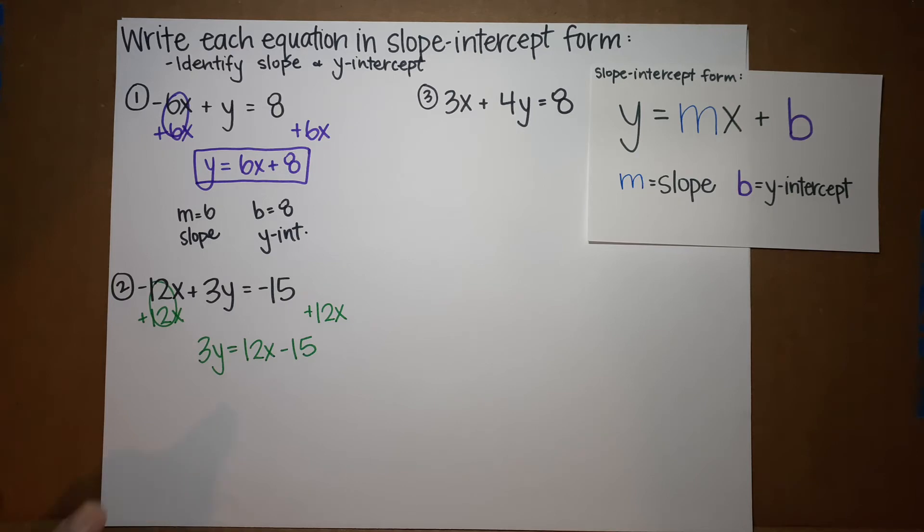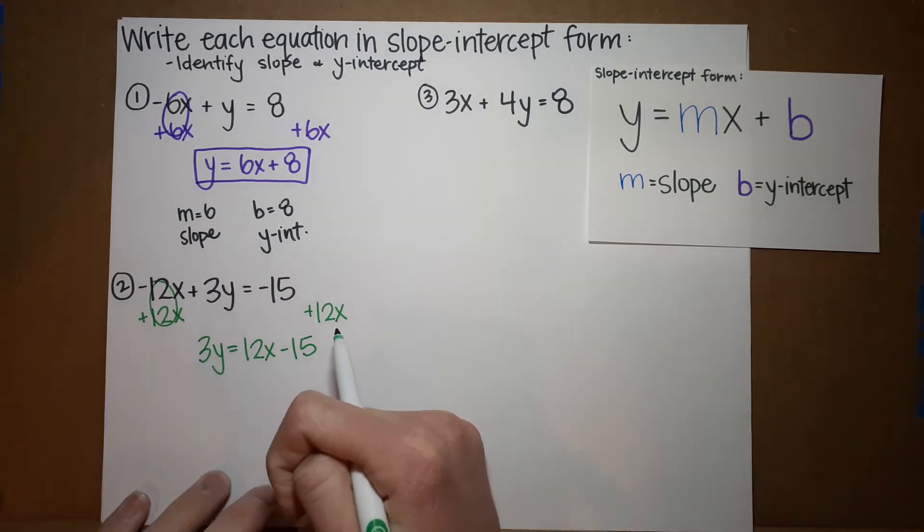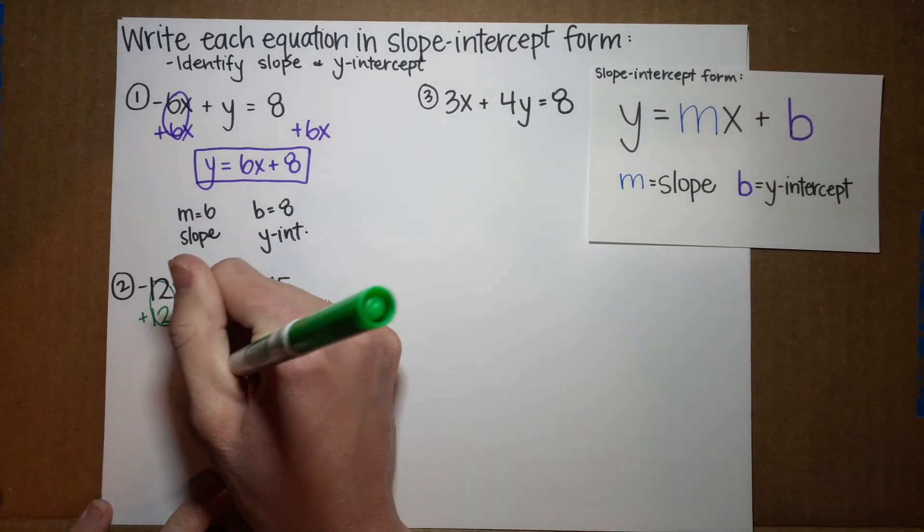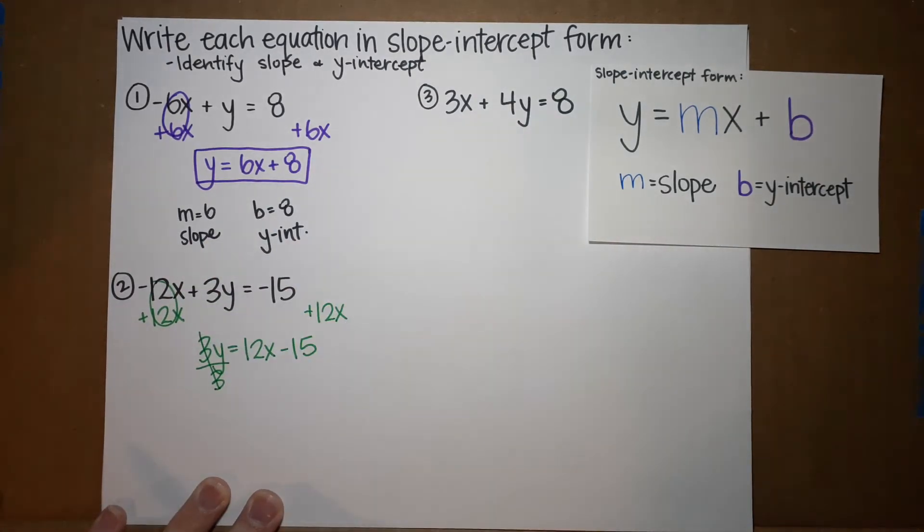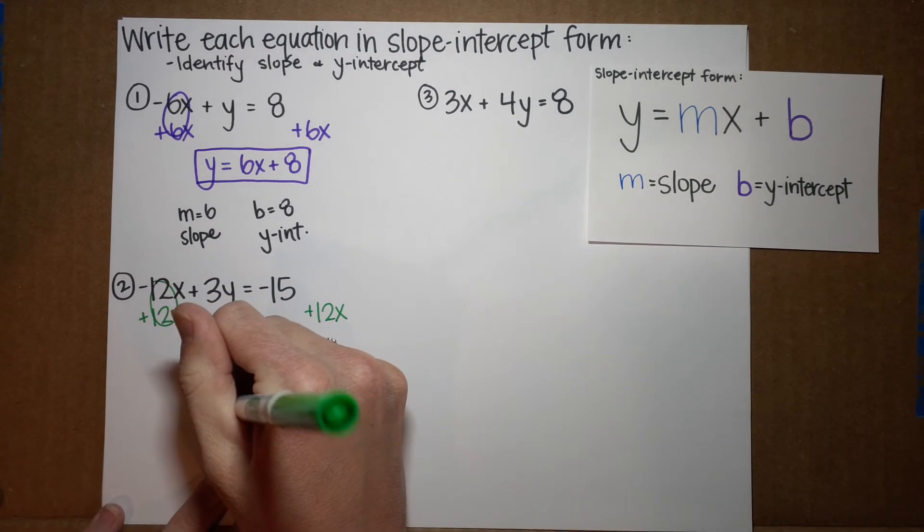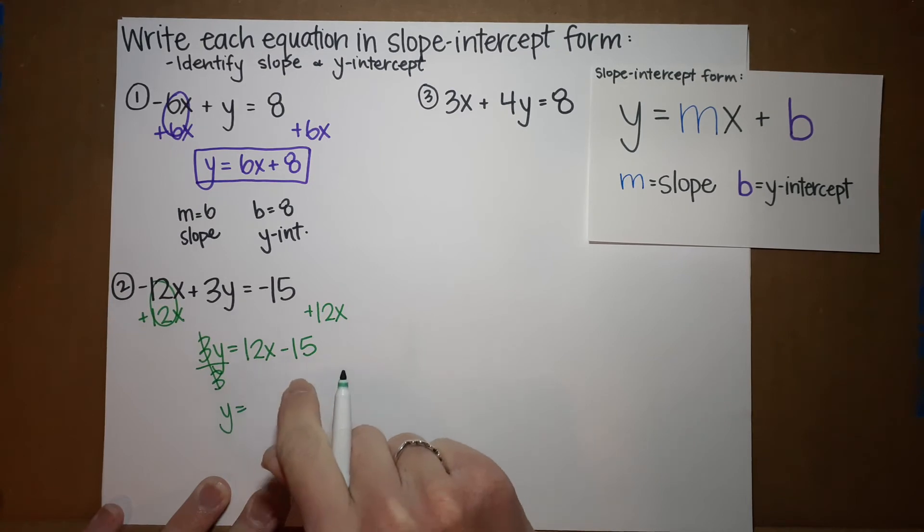All right. This is where you might go, what's that 3 doing there? We can get rid of it. Okay. So, these are being multiplied. It's 3 times y. To get rid of multiplication, I do the opposite, which is divide. So, watch what happens if I divide this by 3. Guess what? 3 divided by 3 is 1. So, I'm left with just 1y, or we just write it as y. But, if I divide this side, I must divide this side.